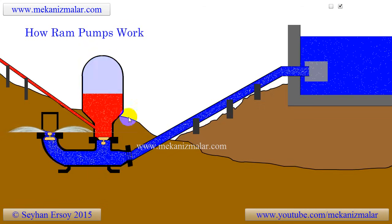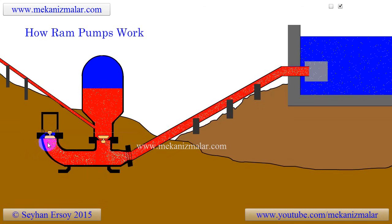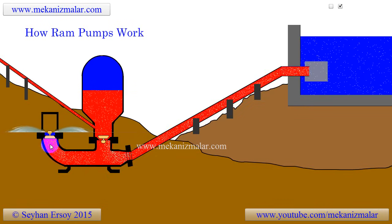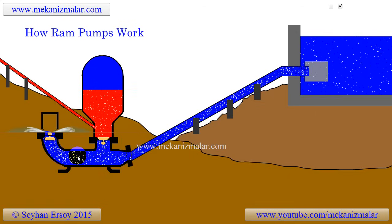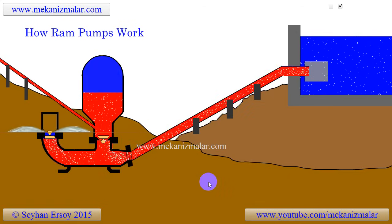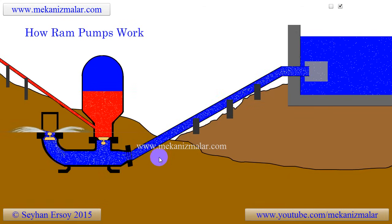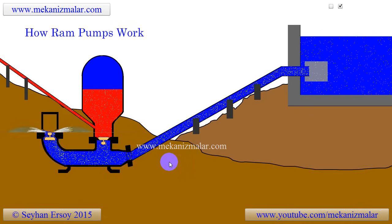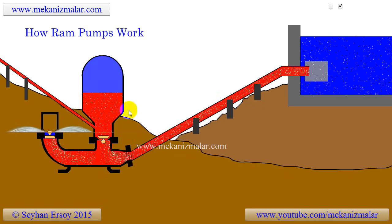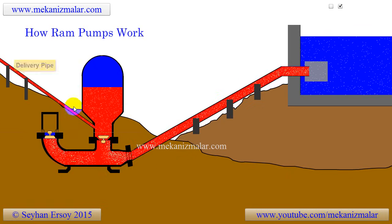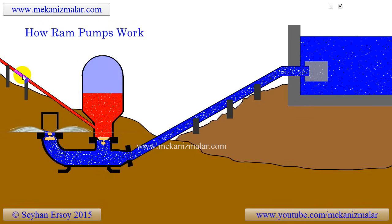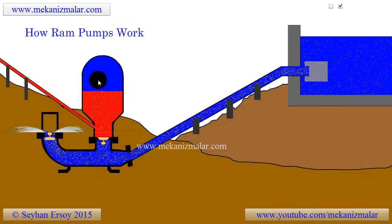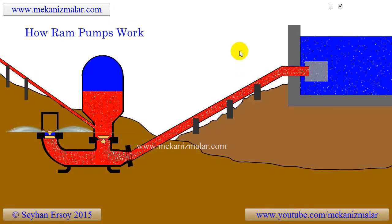Some time later, the water closest to the waste valve moves backwards toward the accumulator, causing the waste valve to open, and the cycle repeats itself all over again. When the waste valve opens, the delivery valve closes and vice versa. However, the water continues to flow through the delivery pipe due to the pressure of the trapped air inside the accumulator. The accumulator acts just like a flywheel, regulating the water flow rate through the delivery pipe and absorbing pressure spikes from the system.